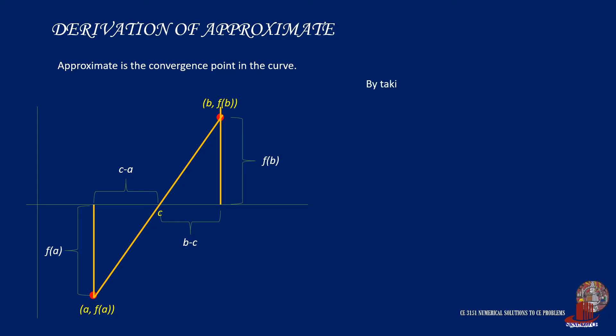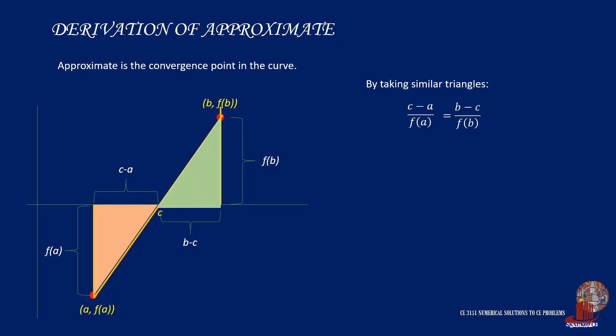By taking similar triangles, we can take ratio and proportion such that, starting with the lower limit, we can have (c - a) all over the function of a. Taking the triangle drawn by the upper limit, we can equate (b - c) all over the function of b. Cross-multiply terms to get the following equation and expanding terms, we have c times the function of b minus a times the function of b is equal to b times the function of a minus c times the function of a.